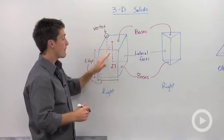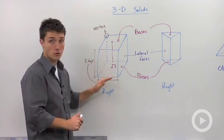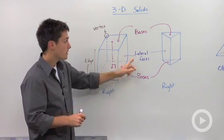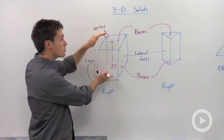Bases are going to be polygons, and in a prism, these bases are going to be congruent and parallel. The lateral faces are the sides of the solid that are in between the bases.